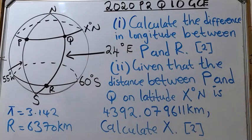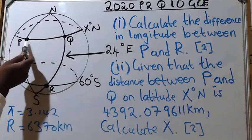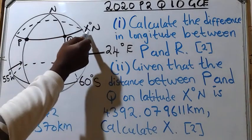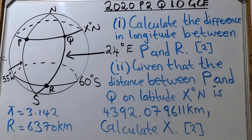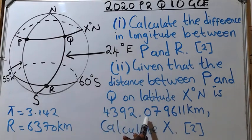We start with question number one: calculate the difference in longitudes between P and R, carrying two marks. Then question two: given that the distance between P and Q on latitude X is 4,392.079611 kilometers, calculate the value of X.